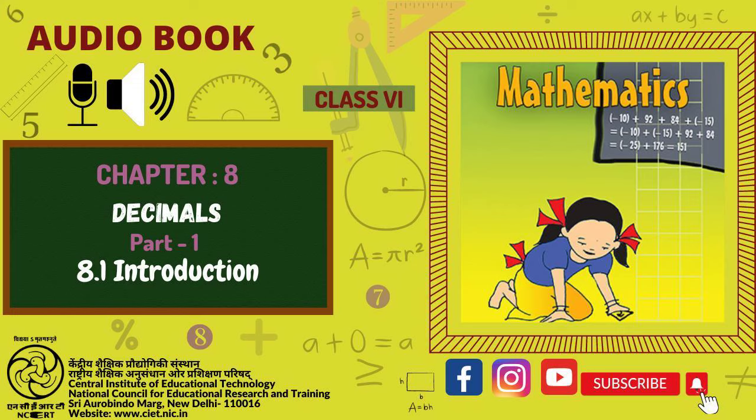So Savitha said, I have 5.75 rupees and Shama said, I have 7.50 rupees. Have they written correctly? We know that the dot represents a decimal point. In this chapter, we will learn more about working with decimals.